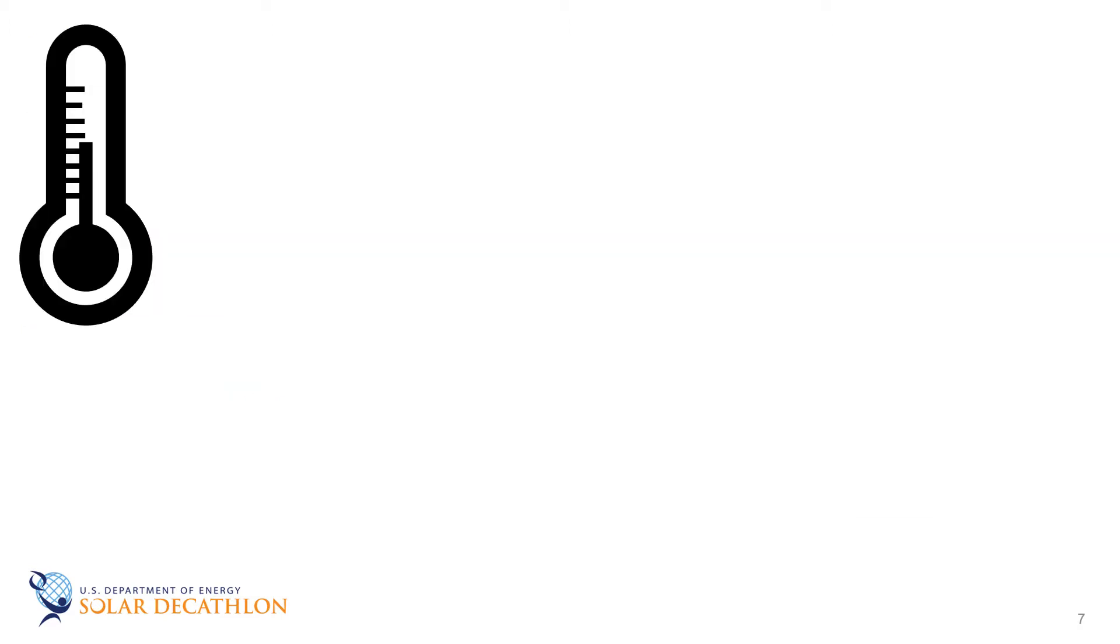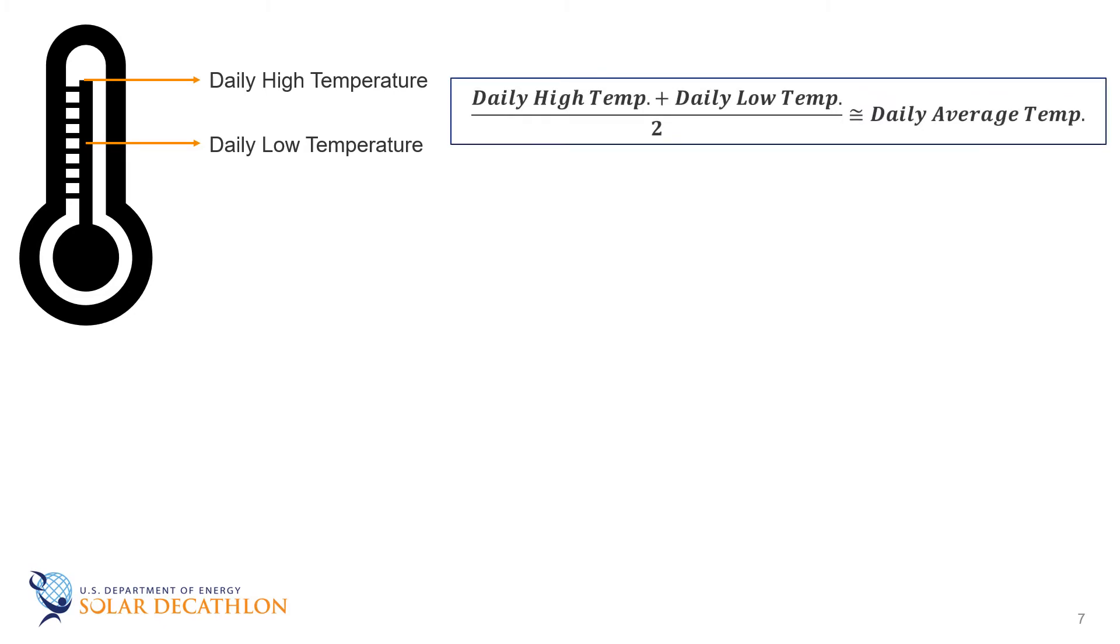Collecting weather data today is a highly automated process, but before computerized data acquisition, the data was collected manually, typically at airports. The thermometers could capture high and low temperature measurements for each day, and these data points allowed for the calculation of an approximate daily average temperature.